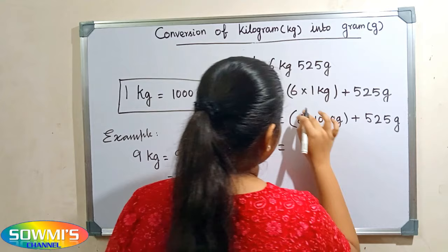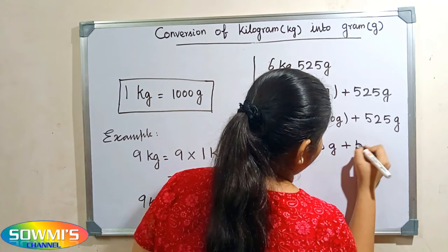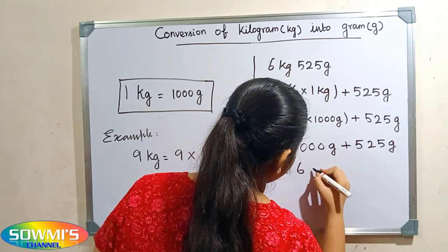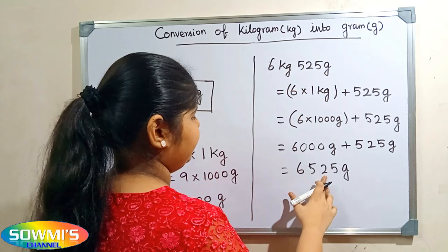Solving the brackets: six multiplied by one thousand grams equals six thousand grams. Six thousand grams plus five hundred and twenty five grams — when we add these, our answer will be six thousand five hundred and twenty five grams. That is, six kilogram five hundred and twenty five grams equals six thousand five hundred and twenty five grams.